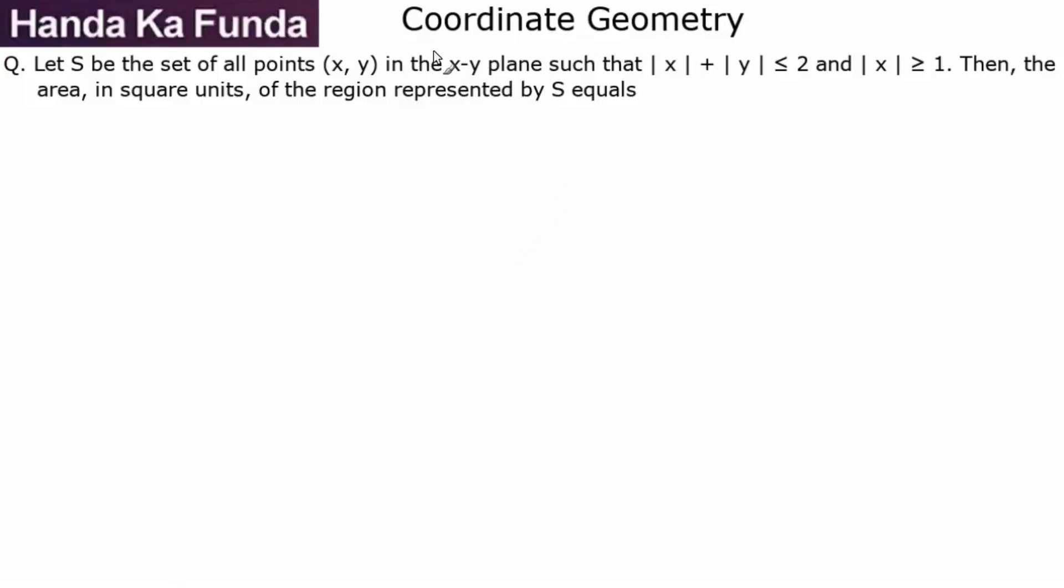Hi everyone, I'm Ravi Handa. Welcome to another question on coordinate geometry. Let S be the set of all points in the xy plane such that |x| + |y| ≤ 2.